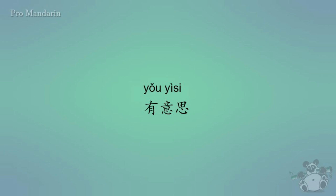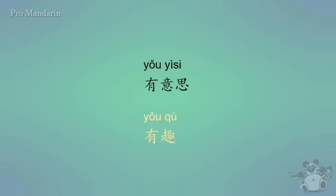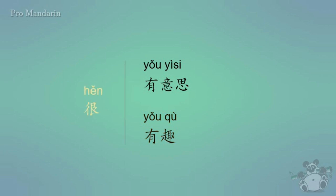In this case, though, yǒu yìsi — you would think at first that it means 'it has meaning', but that really wouldn't make sense, and that's not a phrase we use in English. The equivalent phrase in English is 'it is interesting.' So yǒu yìsi means 'it is interesting.' There's another way to say it: yǒu qù. And to say 'it's very interesting', all you have to do is put hěn before it — hěn yǒu yìsi means 'very interesting', or hěn yǒu qù. For the rest of this lesson, we're going to mostly focus on yǒu yìsi.